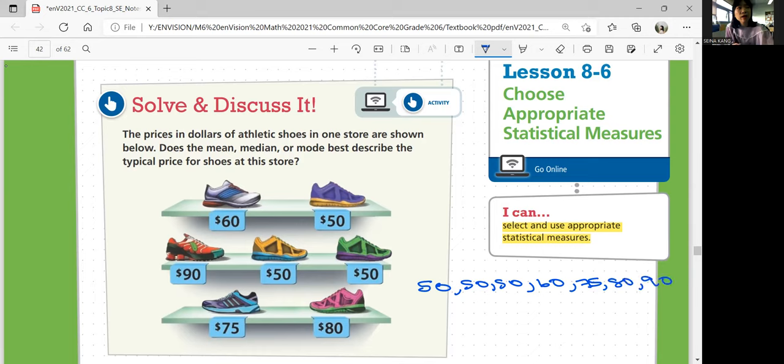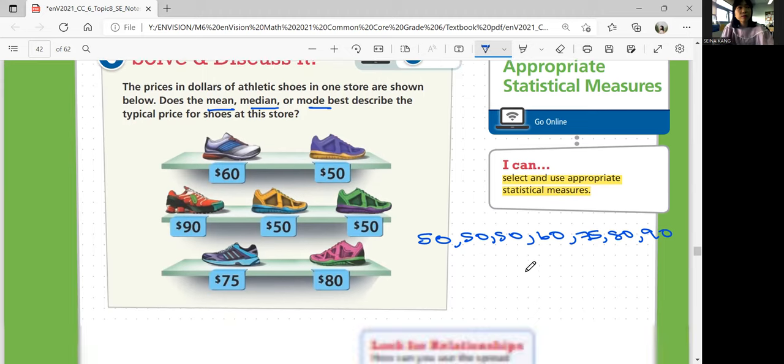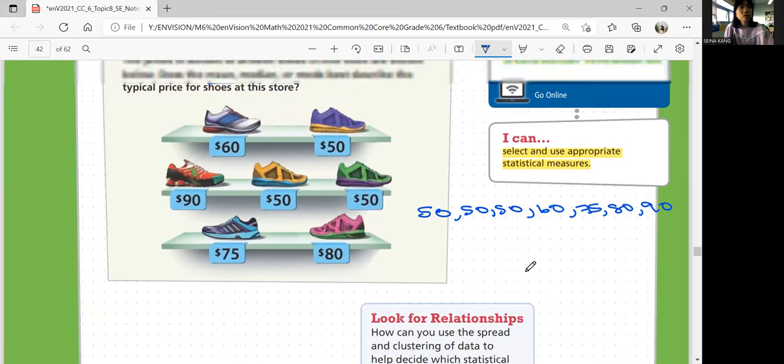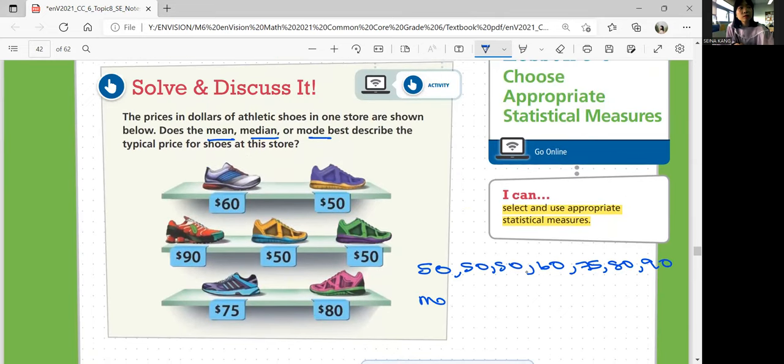So we got seven data, and we want to figure out mean, median, and mode. So the mean, how do you figure out the mean? You can figure out the mean by adding all of them up. So 50 plus 50 plus 50 plus 60 plus 75 plus 80 plus 90 divided by seven. It's going to be 65, so mean is 65. That's your average price.